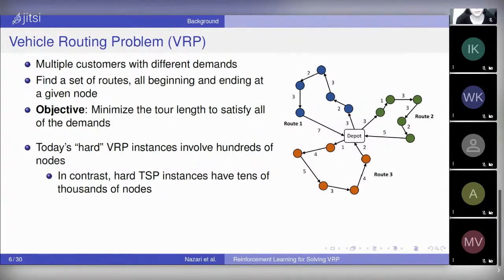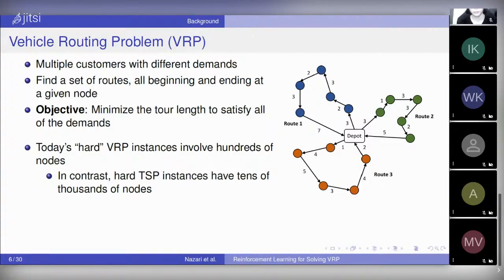Let's start with the simplest vehicle routing problem. In this version of vehicle routing, there is a single depot and multiple customers — you can see a visualization on the right-hand side. The objective is to find a set of routes, all beginning and ending at the depot. There is one or multiple vehicles that are refilling at the depot, satisfying the demand of a bunch of customers, and then returning to the depot to refill. Compared to the traveling salesman problem, which we can now solve for very large problems with a couple thousand nodes, vehicle routing is considered to be way harder. The largest instances we can solve, even in the simplest forms, are limited to a couple hundred customers.